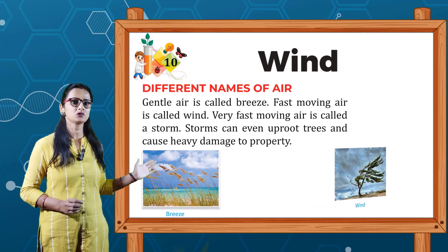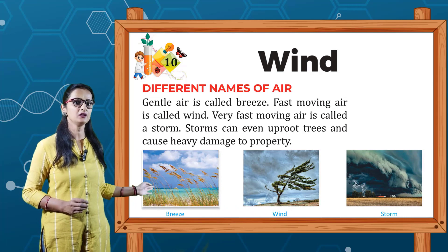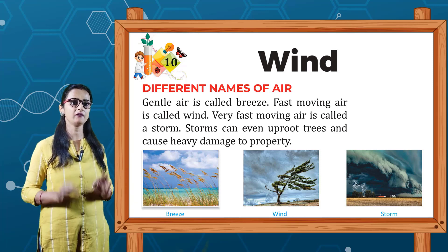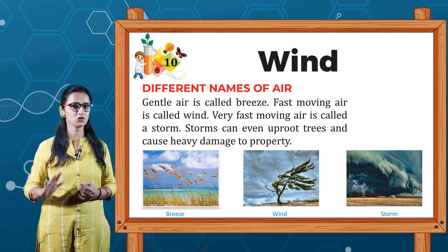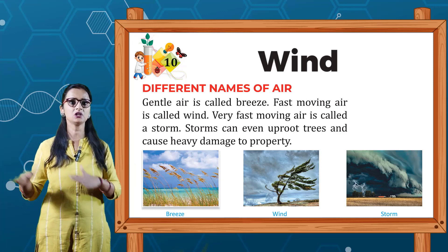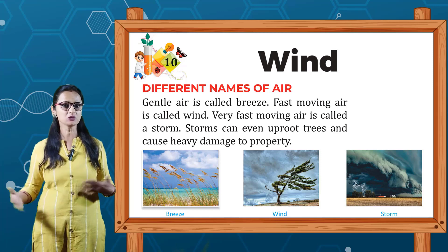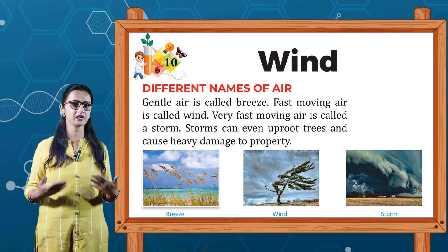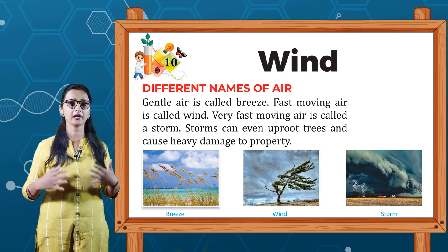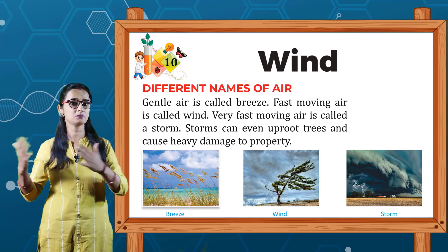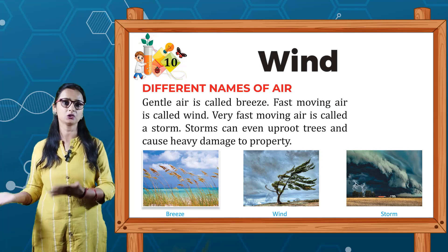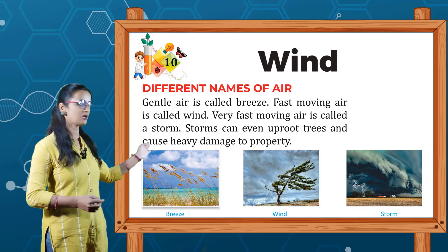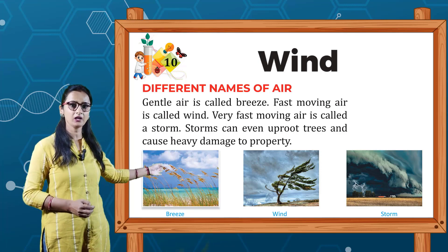Different names of air: gentle air is called breeze, fast moving air is called wind, and very fast moving air is called storm. Storm can even uproot trees and cause heavy damage to property. Dekhiye bachon, air different types ki hoti hai. Jo gentle, soothing air hoti hai usko breeze kehte hain. Jo fast moving air hoti hai usko wind kehte hain. Aur jo bohot tez hawa hoti hai usko storm kehte hain. Storm kabhi kabhi bahut damage bhi karta hai — jaise news mein suna hoga ki kisi jagah toofan aata hai. In pictures mein aap dekhiye: pehli picture breeze hai, doosri wind hai, aur teesri storm hai.